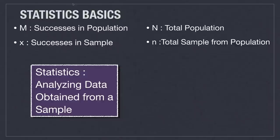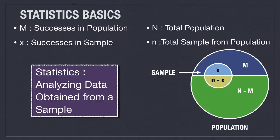A sample is a subset of the population that we can analyze, and we mainly focus on successes or results we are looking for in a sample. Examples of this would be things like age, whether somebody is a car owner or not, whether somebody is a college graduate or not, sex, whether they're a homeowner, etc. In this diagram, the uppercase M represents the successes in the population, uppercase N is the total population, lowercase s represents the successes in the sample, and lowercase n is the total sample from the population.